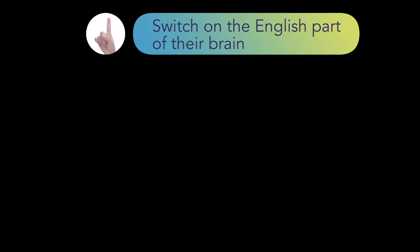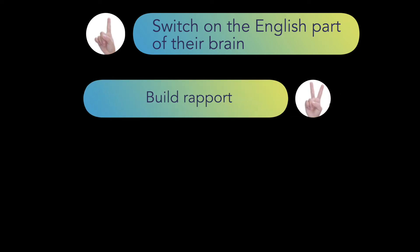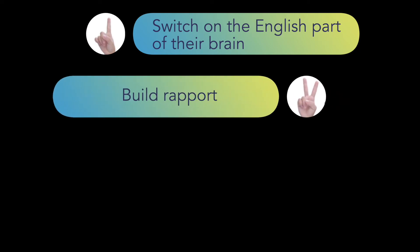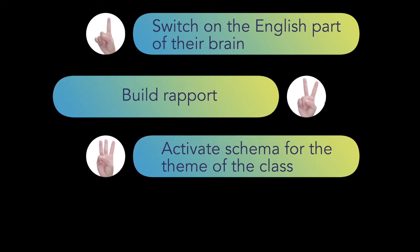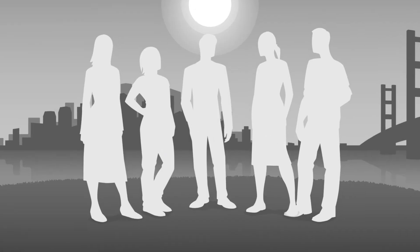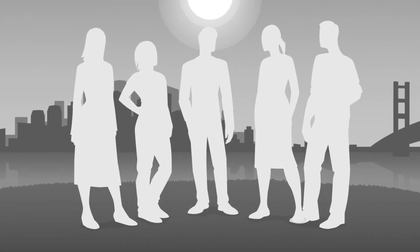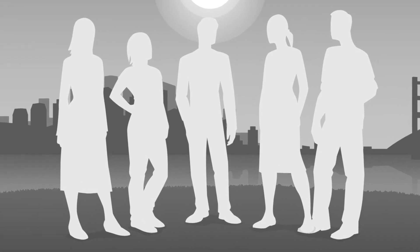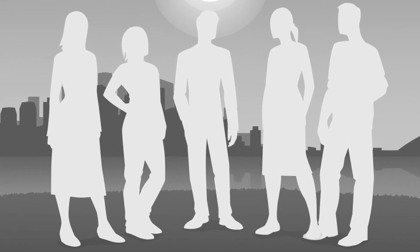So we have switched on the English part of their brain and we've built some rapport. Now we need to activate the schema for the theme of the class. What is schema? Well, schema is the student's background knowledge — their existing knowledge of the world. Remember, we are not starting with blank slates. Students have lived lives, they understand concepts, they just don't know the English for those concepts.